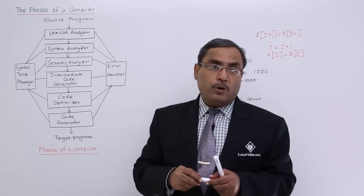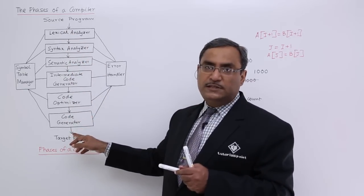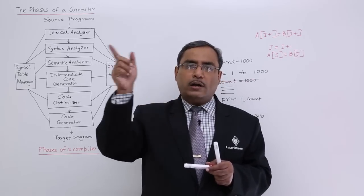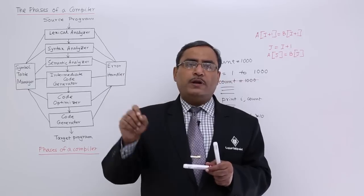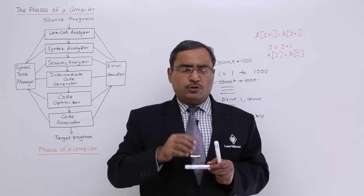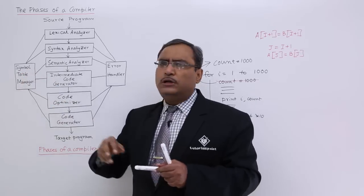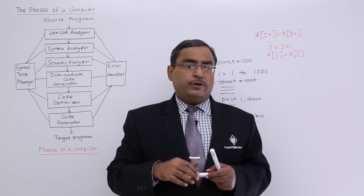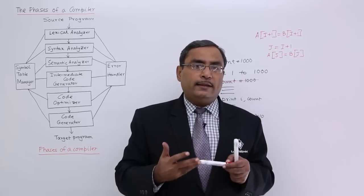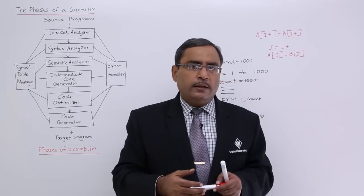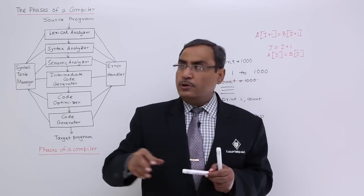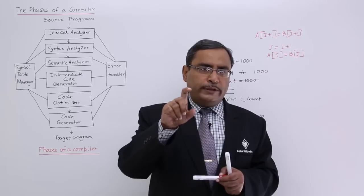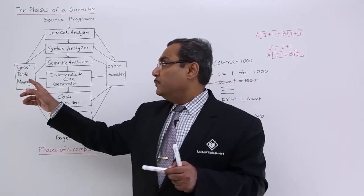During the execution of these phases, we have the symbol table manager. Different labels — for example 'goto 100', where 100 is a label — and identifiers like 'count = count + 1' are kept in the symbol table. If we use a variable without defining it at the top in Java or C programming, the symbol table will detect this and produce an error message, because the symbol table keeps track of which variables are defined within a particular scope or block.